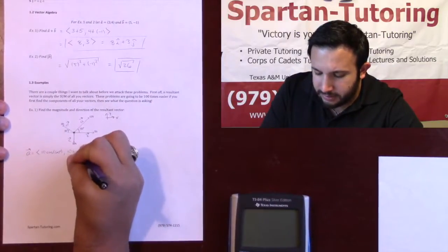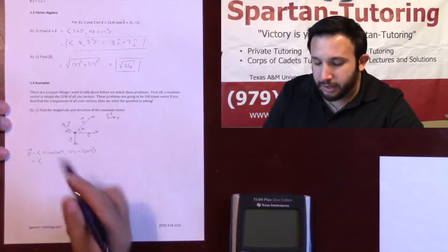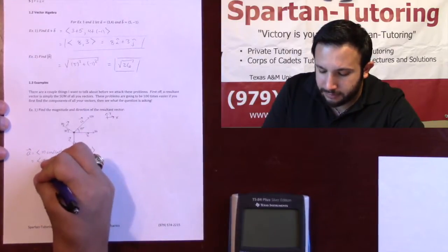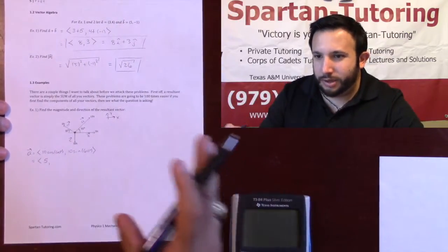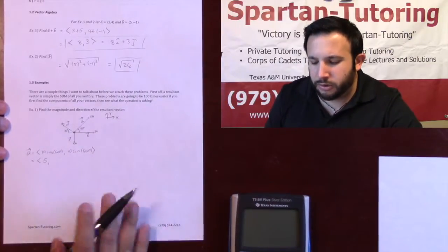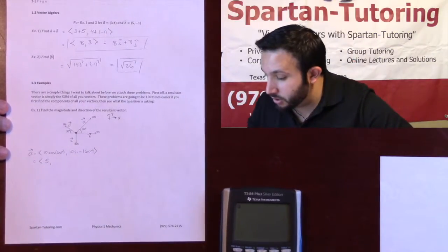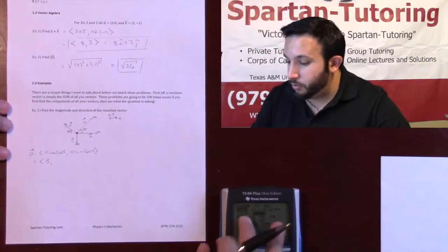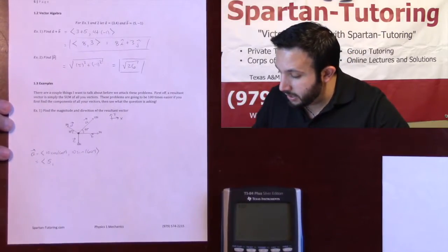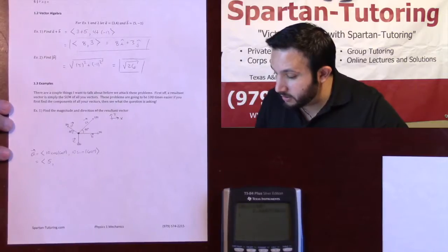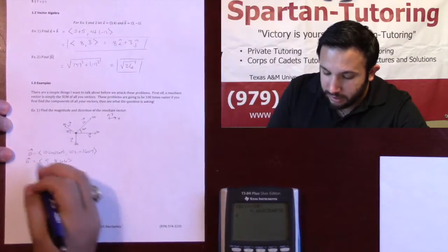The y component of A is opposite my angle, and it's going positive. So it's going to be a positive 10 sine of 60 degrees. We know that cosine of 60 degrees is one half, so 10 times one half is 5. For sine of 60 degrees, make sure your calculator mode is in degrees — very important, because if it's in radians, it's going to jack everything up. So 10 sine of 60 degrees gives me 8.66. So this is vector A.